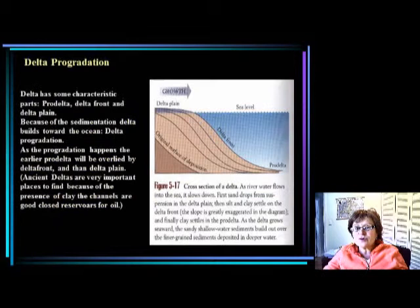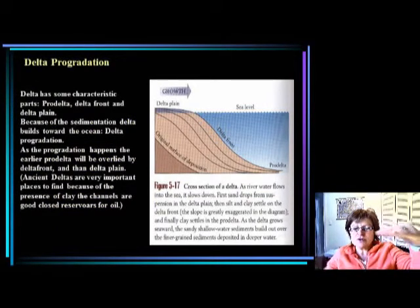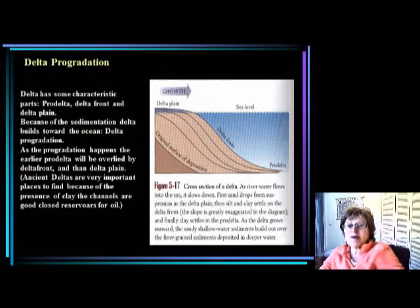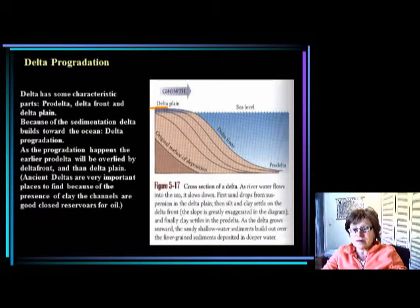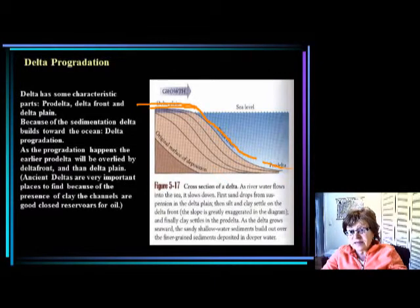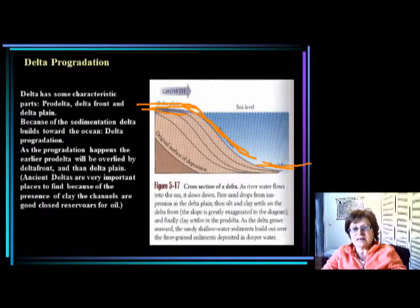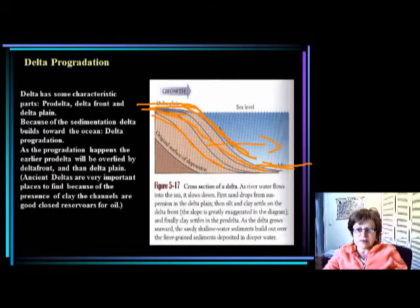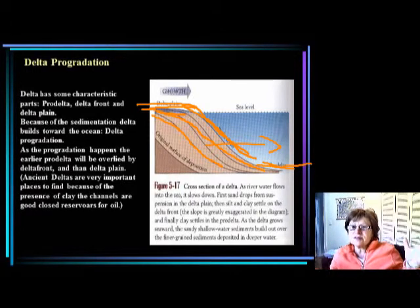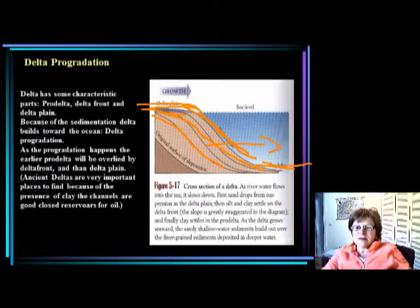This slide shows the development of the delta. Think of the Mississippi entering the Gulf of Mexico — it builds toward deeper and deeper water. It has three parts: the delta plain, the delta front, and the pro-delta. As time goes on, it advances more and more toward the ocean. The delta fills with channels surrounded by mud and clay, making them extremely good oil reservoirs, which is why it is important for geologists to find these ancient delta sequences.